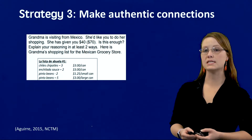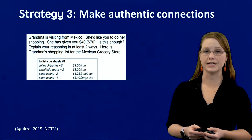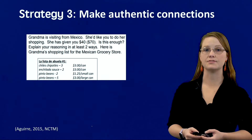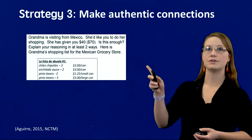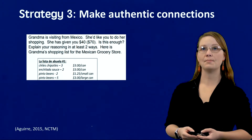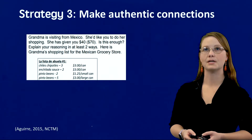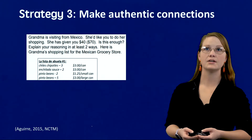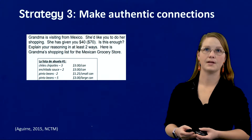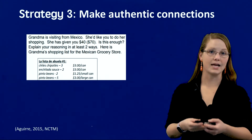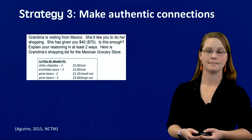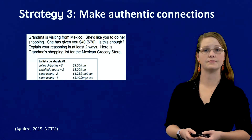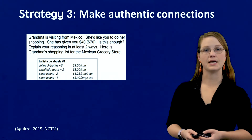The final strategy is to make authentic connections between students' home lives, cultures, and interests. In this example, the context of the problem has been changed to connect meaningfully to the lives of the students in the class. Let me read this story problem aloud: 'Grandma is visiting from Mexico. She'd like you to do her shopping. She has given you $40. Is this enough? Explain your reasoning in at least two ways. Here is Grandma's shopping list for the Mexican grocery store.' You can see they have more culturally appropriate items that the student would be considering to buy. Consider how your students will encounter the mathematical concept you are addressing in their real lives. Making the work more meaningful will support active engagement and conceptual understanding.